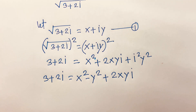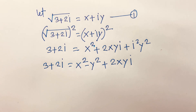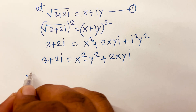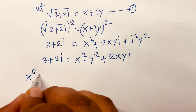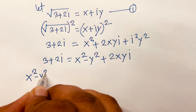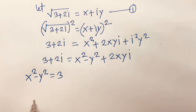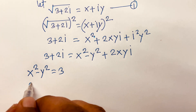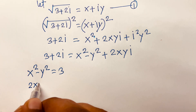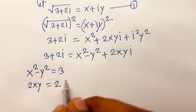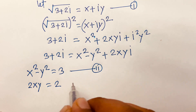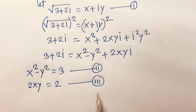Now comparing the real part and imaginary part: x² minus y² is equal to 3, and 2xy is equal to 2. This is our second equation and our third equation.